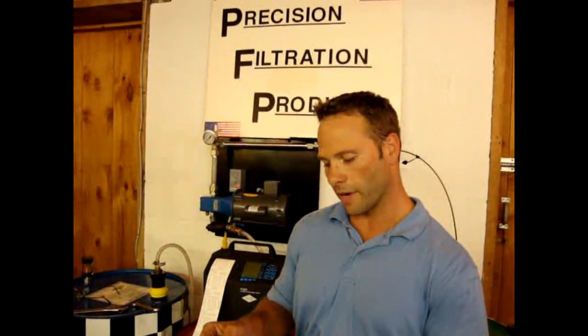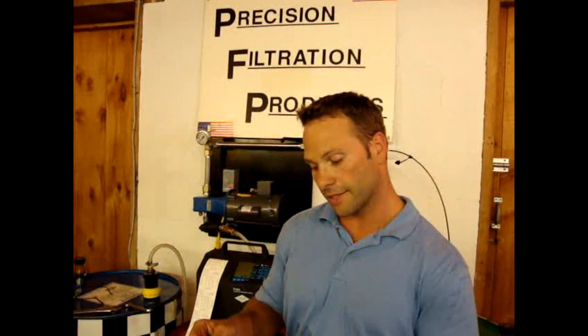What were our initial results? Initial readings in ISO count are 18, 16, 12. That's telling us in the 4-micron channel, we have approximately 2,100 particles per milliliter. In the 6-micron channel, we have about 320 particles per milliliter. And in the 14-micron channel, about 18 to 20 particles per milliliter.